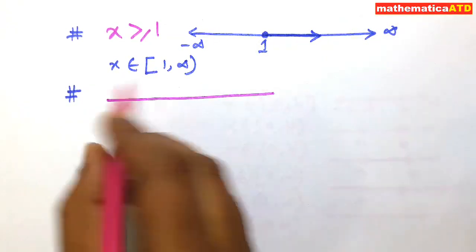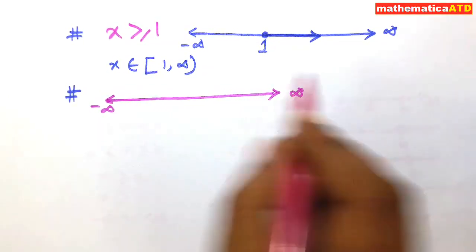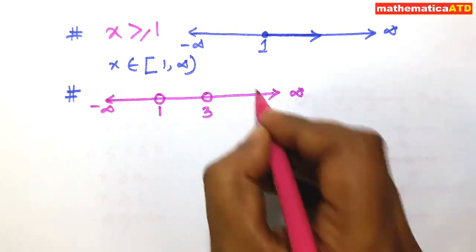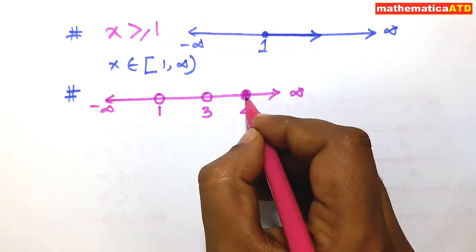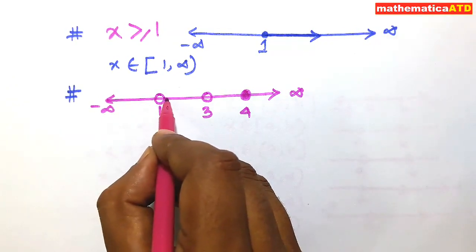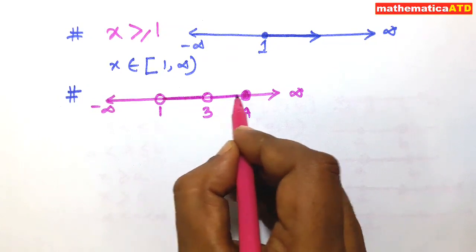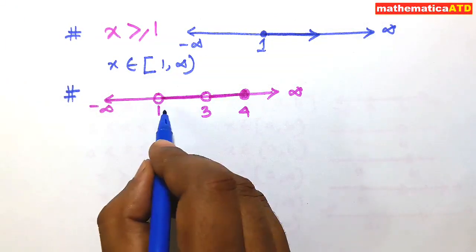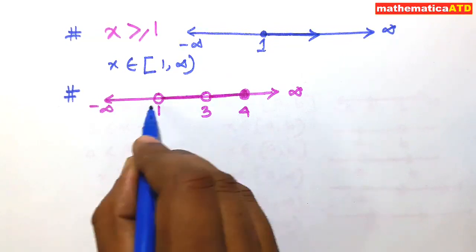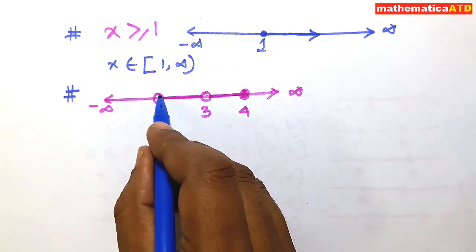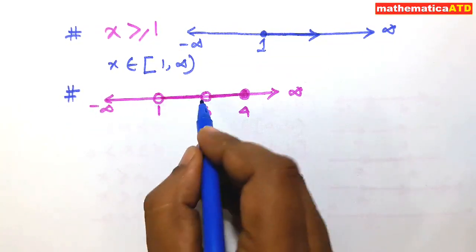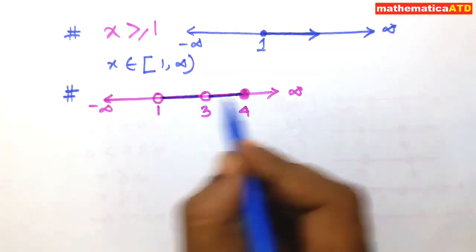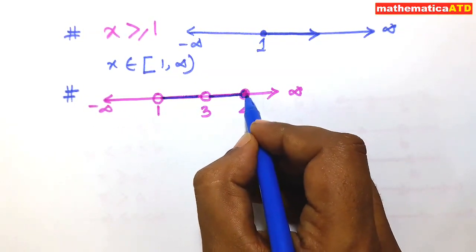Next example: on a real line we draw negative infinity to positive infinity and mark the points 1, 3, and 4. Points 1 and 3 are shown as white circles (excluded), while point 4 is darkened (included). All points between 1 and 3 are excluded at the endpoints, and all points between 3 and 4 are taken including 4.